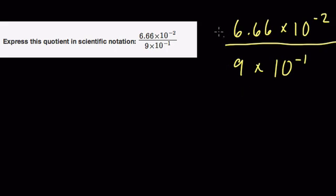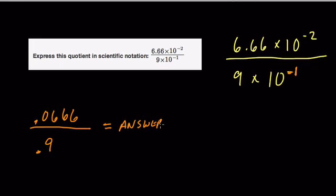So they would take the numerator and they'd write that as 0.0666 and the denominator as 0.9. That's equivalent forms. They've used a negative exponent right here, negative 1 to move your decimal once to the left and negative 2 to move your decimal twice to the left and then you divide these two numbers and get an answer. And that's not wrong. This is mathematically equivalent.